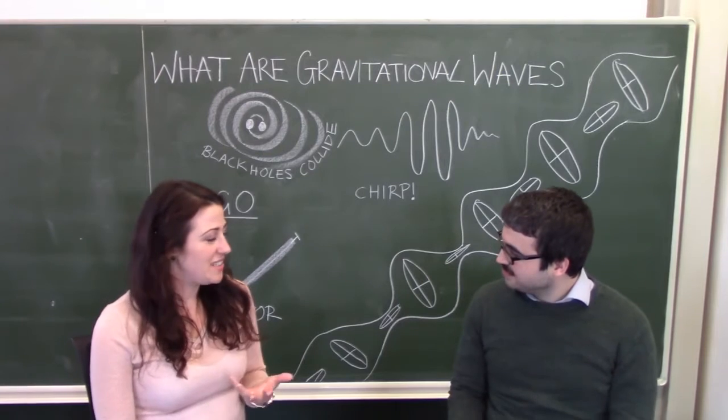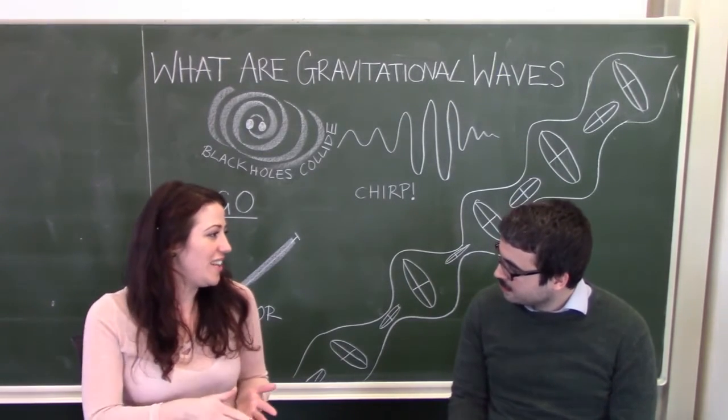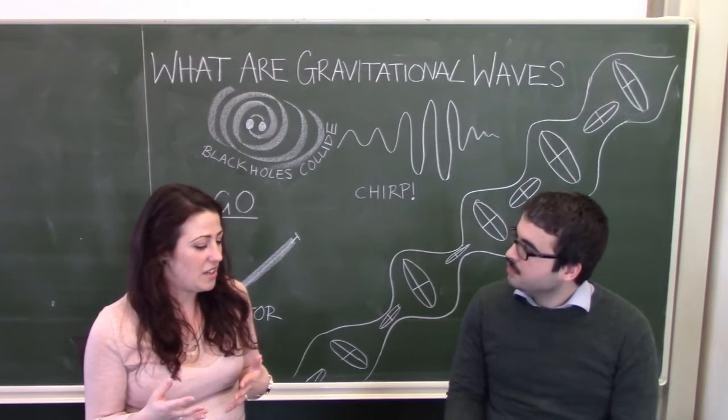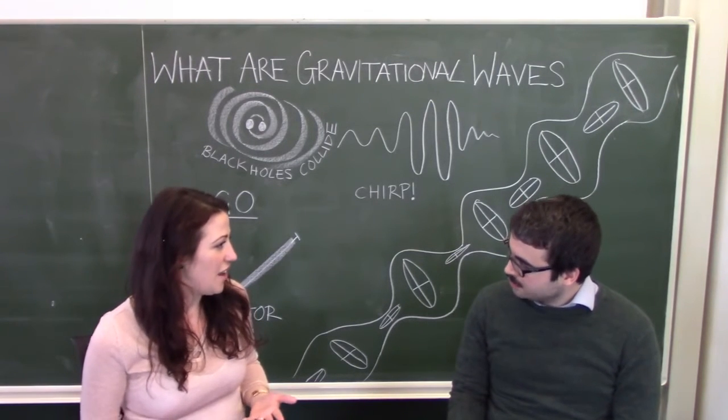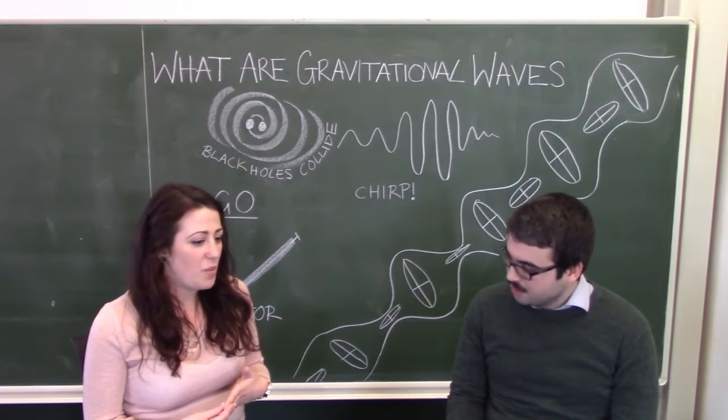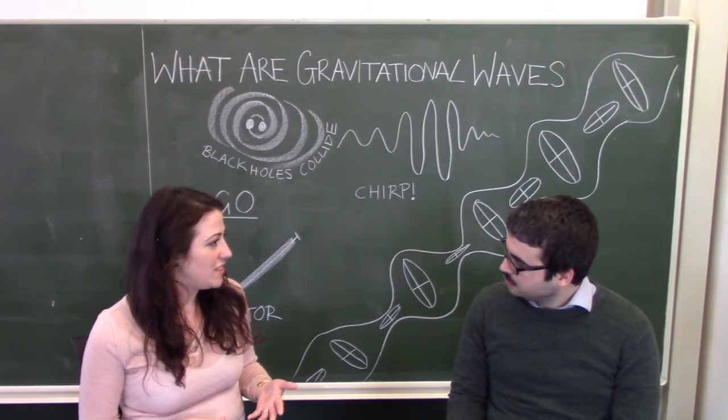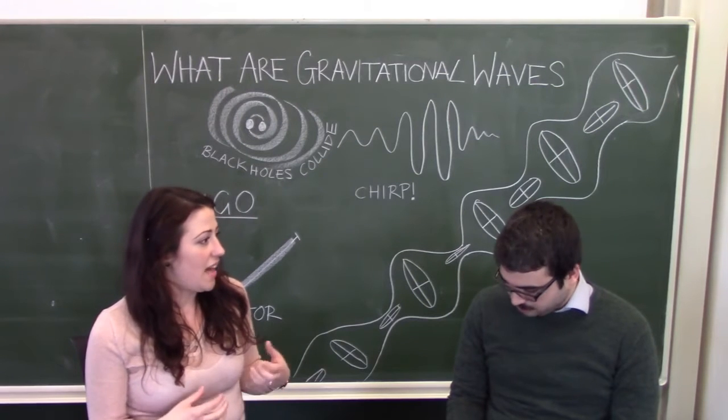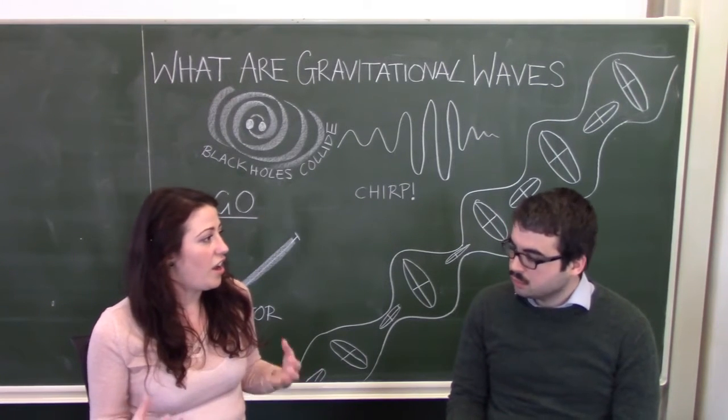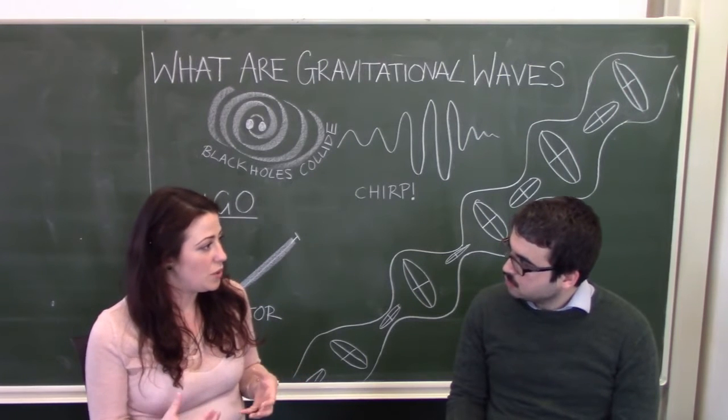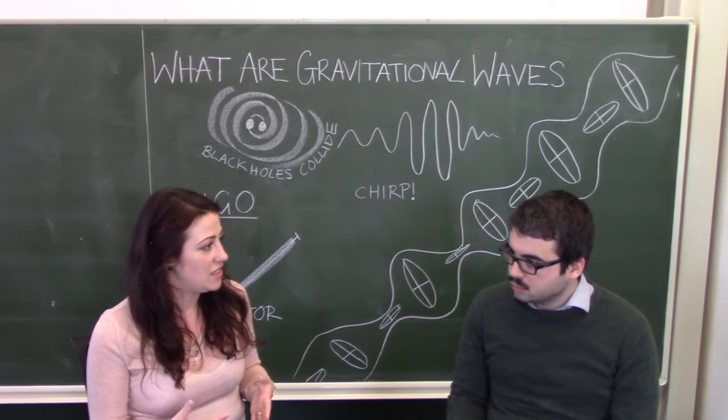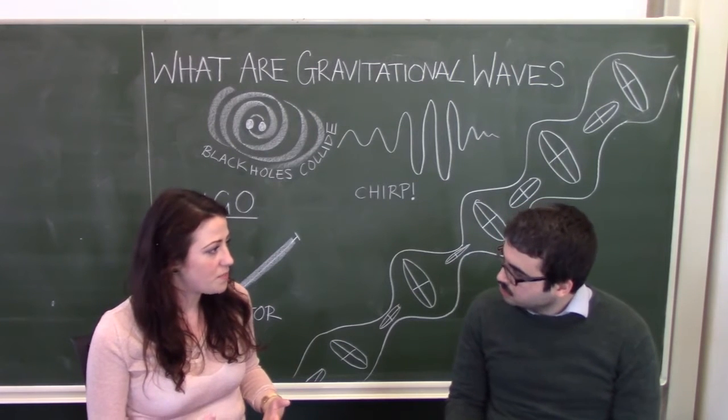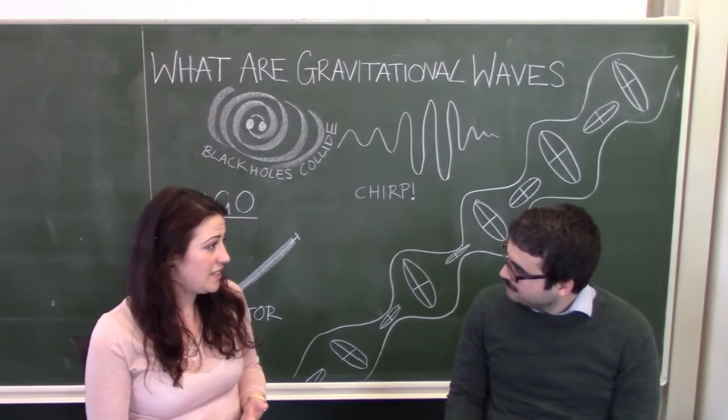To understand what gravitational waves are, I'd just like to take the story back a bit to see what gravity is itself. We talked at school about Newton's concept of gravity and he said that objects that have mass, such as the Sun and the Earth, are gravitationally attracted towards each other depending on the distance between them. So, the closer they are, the stronger the attraction. And this theory was fantastic.